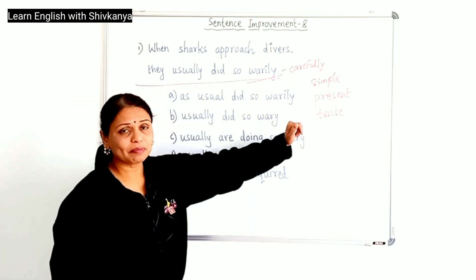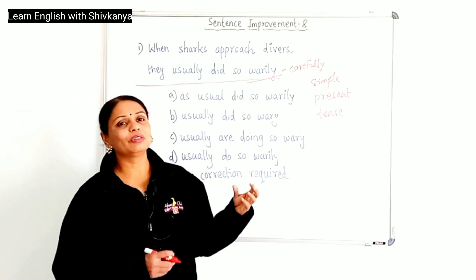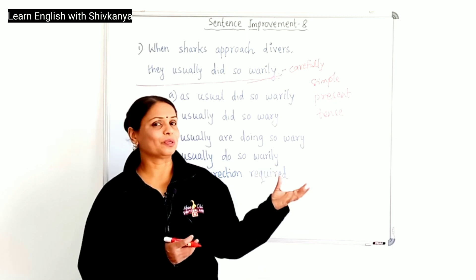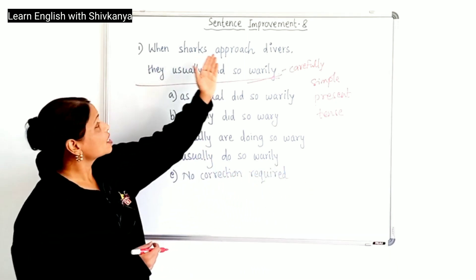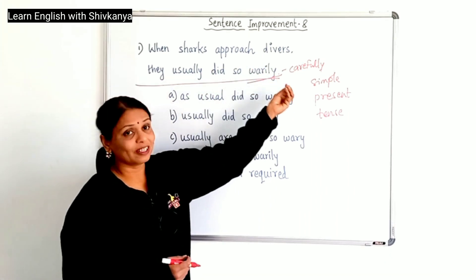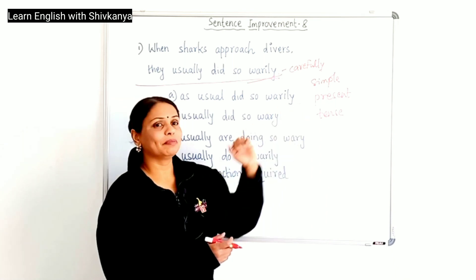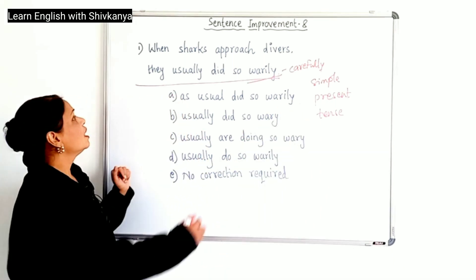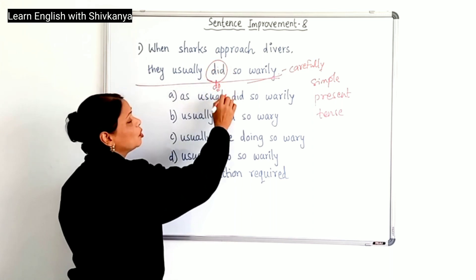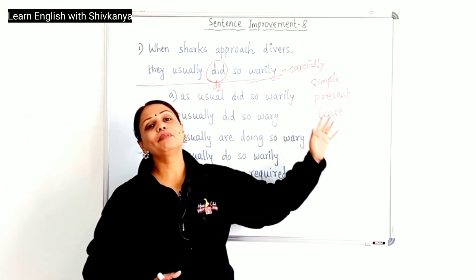We use 'usually,' 'always' — these time indicators — and they also indicate it's a simple present tense. The third important thing: if you look at this sentence, it tells about the general behavior of the sharks. It is telling the general truth, a scientific fact — that when the sharks approach divers, how do they do? They do it carefully. So it is a truth. In all these situations, we always use the simple present tense. Coming to the wrong phrase, 'did' is in the simple past tense. It should be 'do' because we are talking about the general truth, wherein we use the simple present tense.